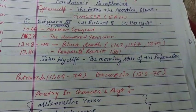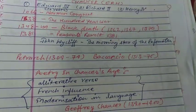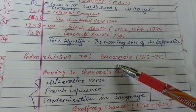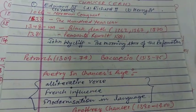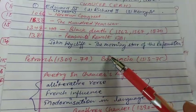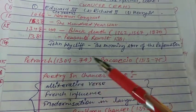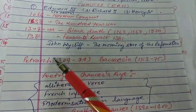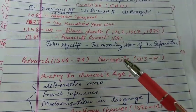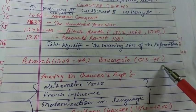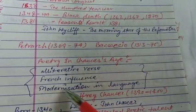Wycliffe is called the Morning Star of Reformation. Petrarch and Boccaccio are two writers whose work influenced many later writers including Shakespeare — many writers depended on these two for motivation. Petrarch's dates are 1304 to 1374, and Boccaccio's dates are 1313 to 1375.